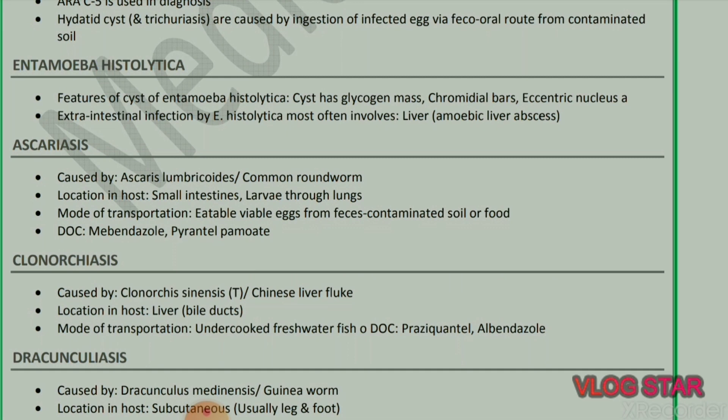Next parasite: Clonorchiasis, caused by Clonorchis sinensis, also known as the Chinese liver fluke. Location in host: liver. Mode of transmission: undercooked freshwater fish. Drug of choice: praziquantel and albendazole.